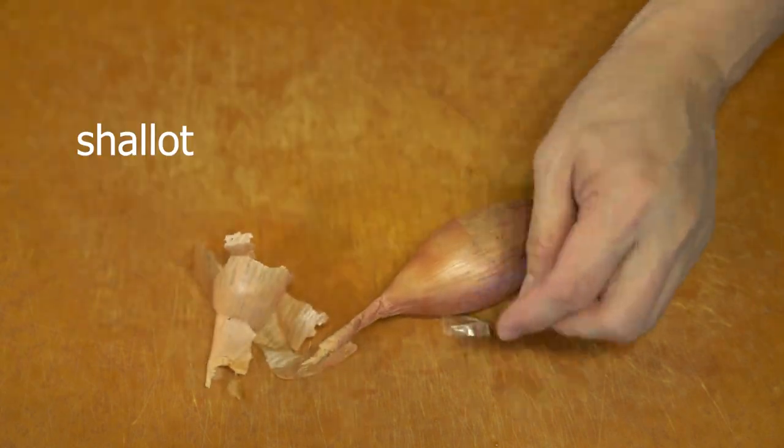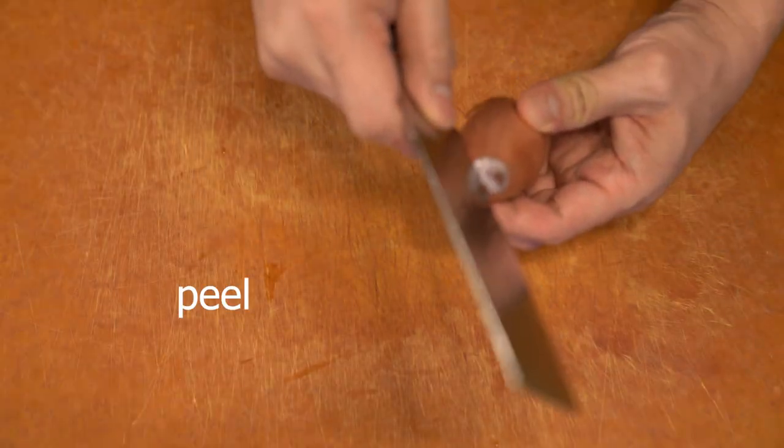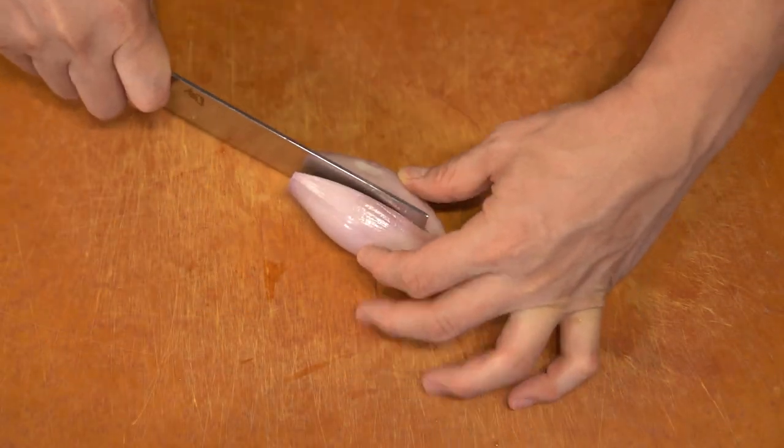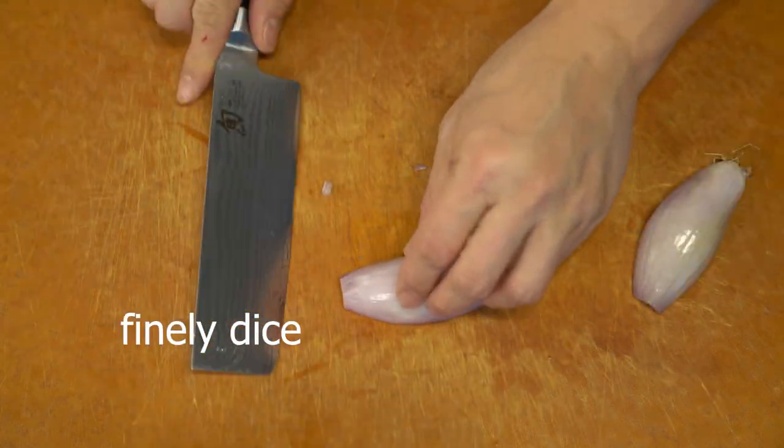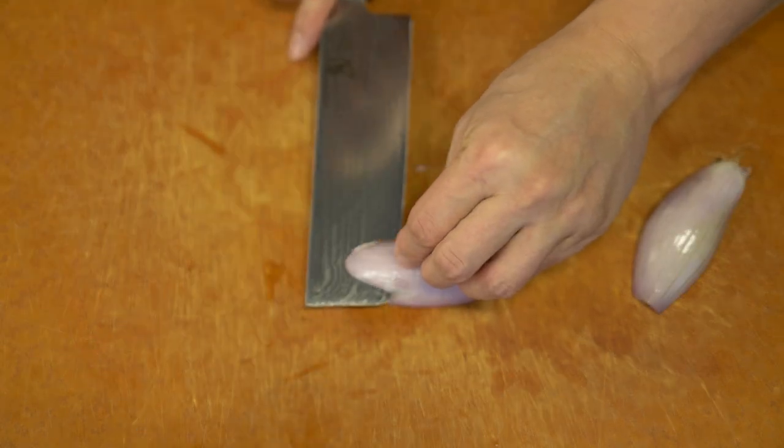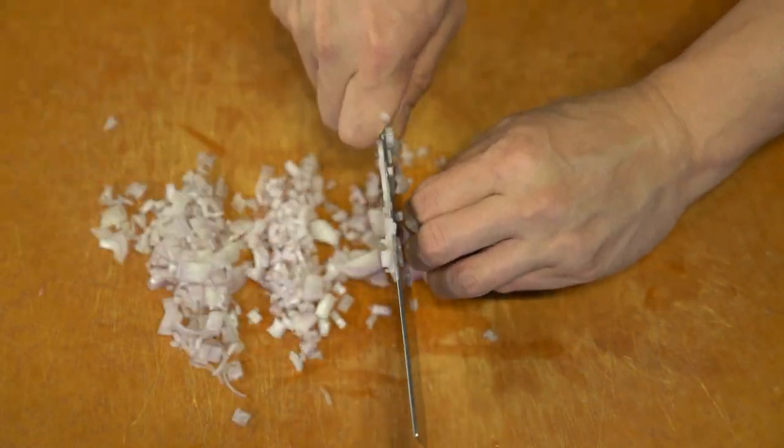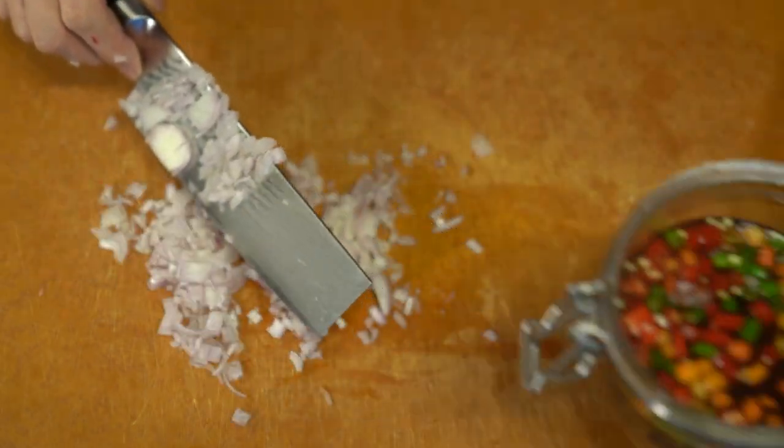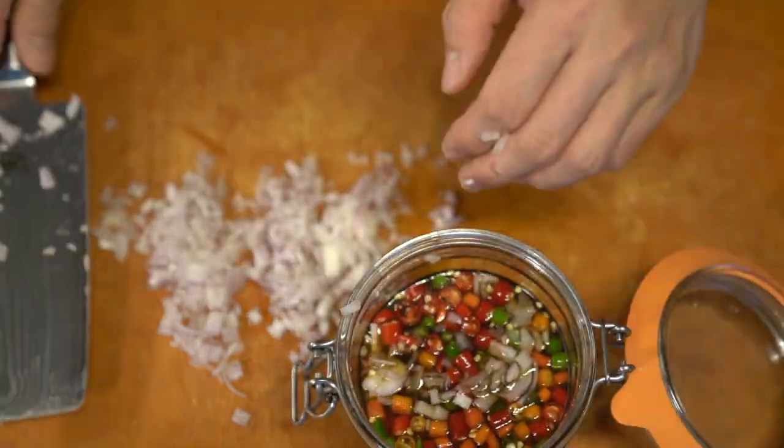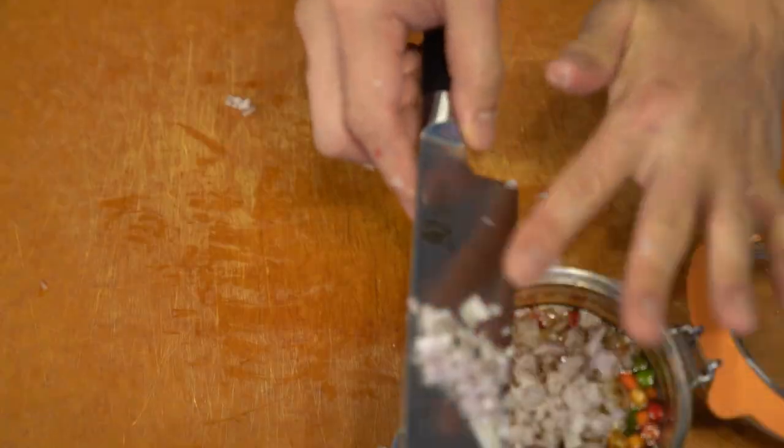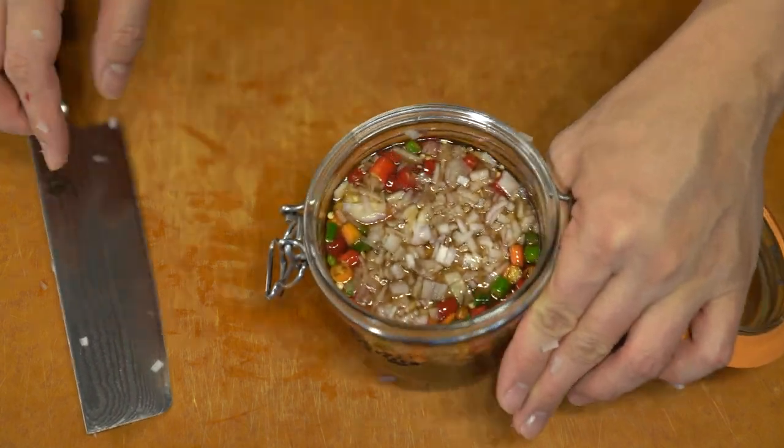The Thai bird's eye chili that I chopped up, you can choose to chop it finely or rough. The advantage to chopping it rough is that you can make it easier to pick out the amount of chili you want to go with your dish. I also soaked it through water to help get rid of some of the seeds to keep the sauce from becoming too spicy.